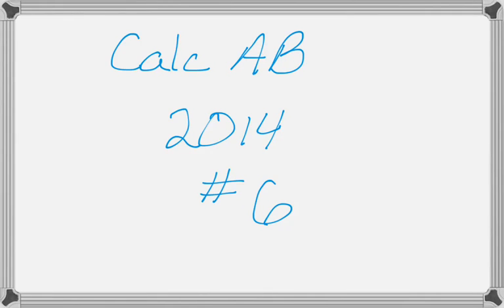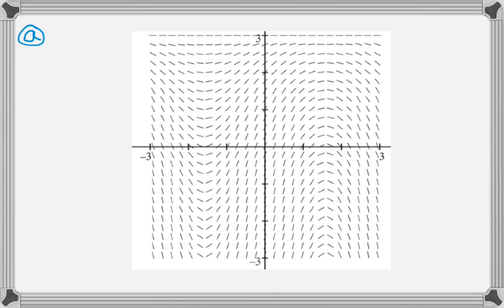Alright, this is question number 6 from the 2014 Calc AB exam, and it is a slope field question. So let's take a look. So in part A, you're actually given the slope field, and what you need to do, it's really a differential equation problem actually, but you're given the slope field.